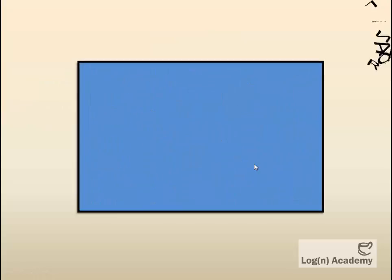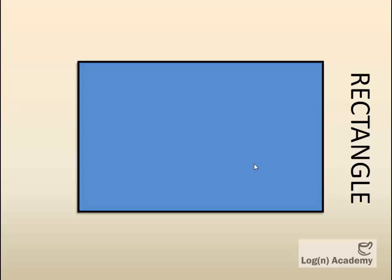In this video, we will talk about another shape, which we know by the name of the rectangle. We have some properties in this shape. Property number one is that it is a quadrilateral shape, which is a shape with four sides. You can see one side here, one side here, one side here, and one side here.